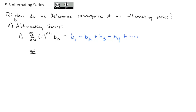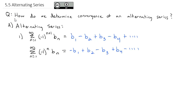The other type is really the same idea. The difference is that negative 1 just has an n power. What that does is allow the first term to start out negative, then we add the second term, subtract the third term, add the fourth term, and so on. Those are alternating series.